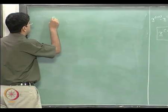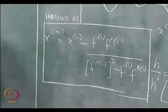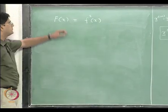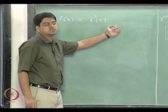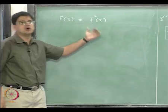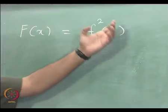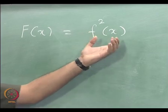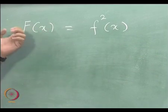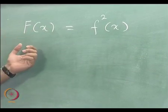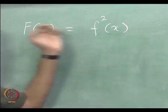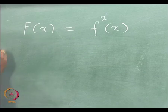Let us define a function F(x) = f²(x), so we have just squared this particular function. Now F(x), because it is squared, is going to always be positive except when x is the solution to f(x) = 0. When f(x) = 0, our capital F(x) is also going to be equal to 0. For all other values of f(x), our capital F(x) is going to be positive.